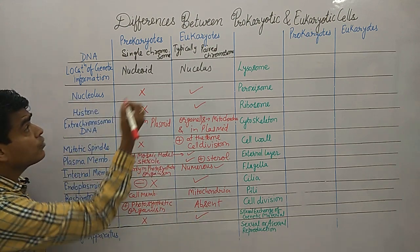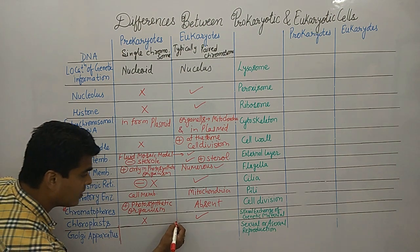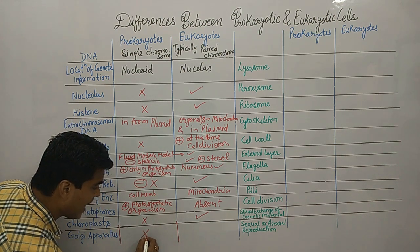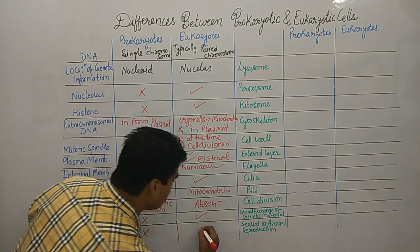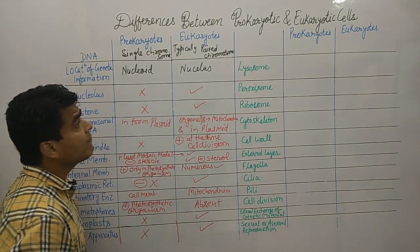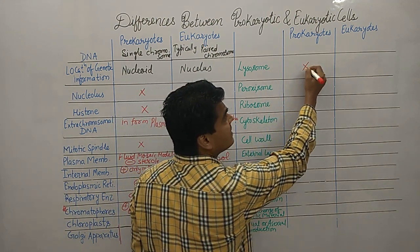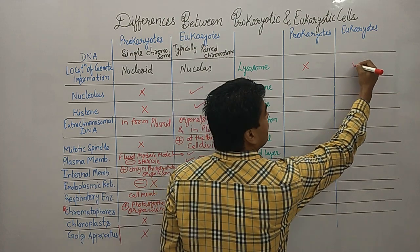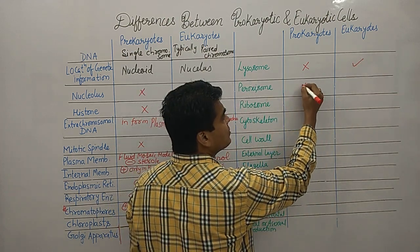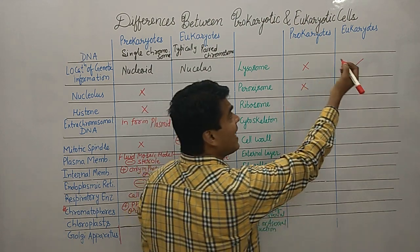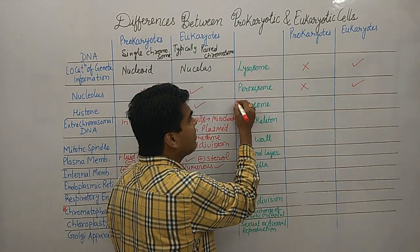Golgi apparatus is absent in prokaryotes and present in eukaryotes. Lysosome is absent in prokaryotes and present in eukaryotes. Peroxisome is also absent in prokaryotes and present in eukaryotes.